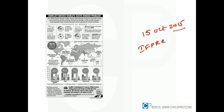Where does India stand? India has improved its position this year — it has come to 55 out of 76 emerging economies. The reasons for India's improved position include the ICDS program and the National Rural Health Mission. Many nutritional programs launched by the government post-2006 have reduced hunger to a large extent.